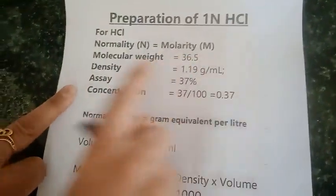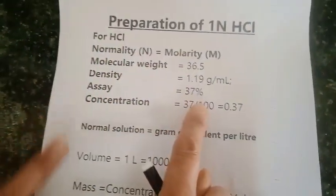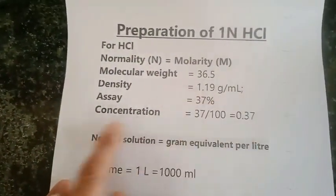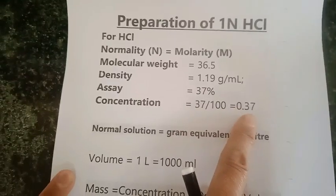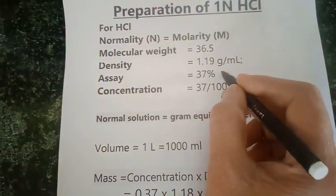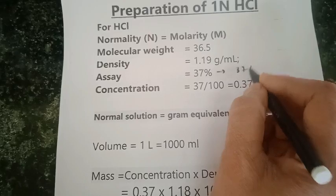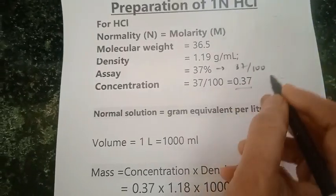So here molecular weight is this, density is this, assay is this. So this assay means this much percent of HCl is present in the concentrated HCl solution. So it means 37 divided by 100 and we get 0.37.